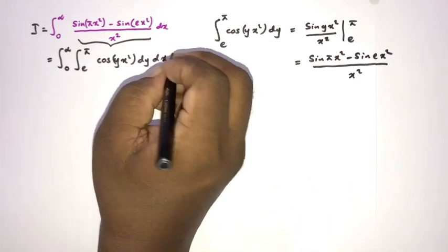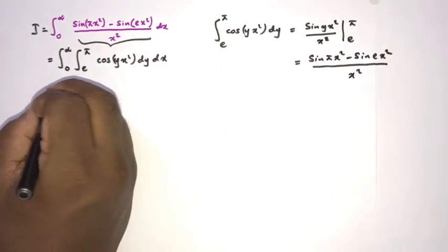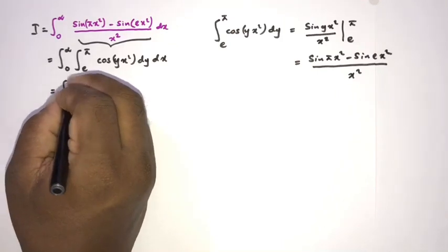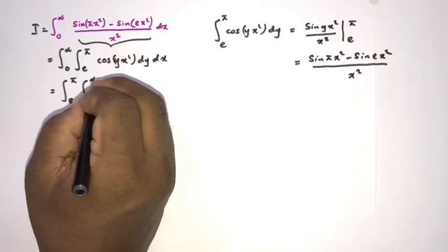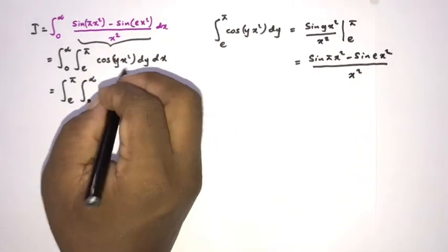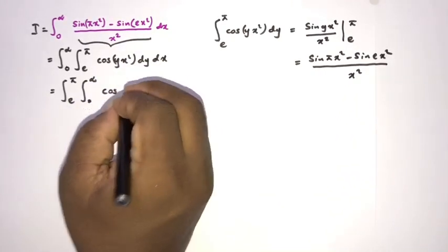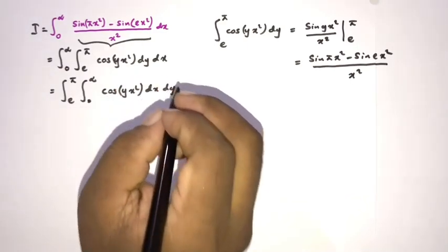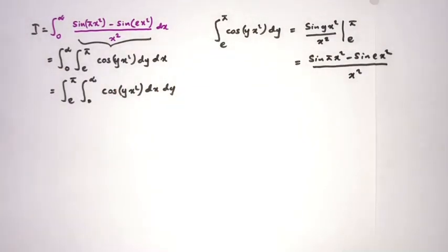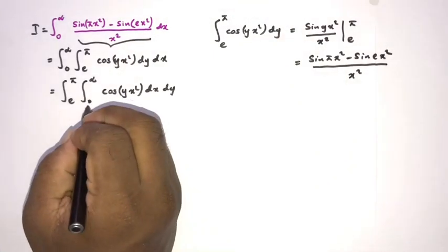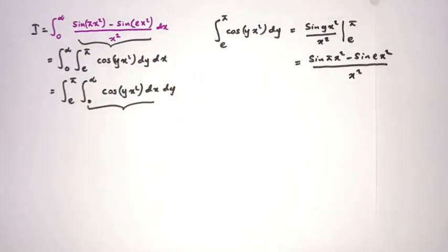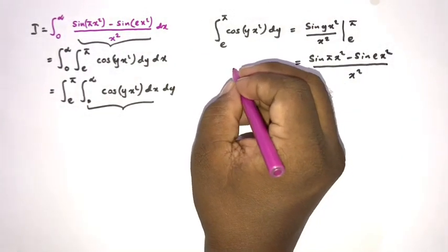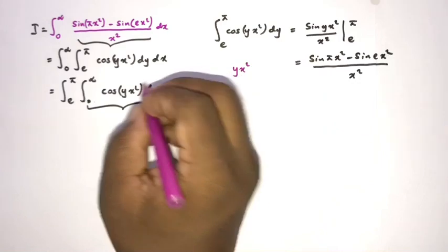We have dx, and then we can change the order of integration: the integral from e to pi and the integral from zero to infinity. We get the integral from e to pi of the integral from zero to infinity of cosine of y x squared dx dy. To evaluate this inner integral I am going to use a substitution. We let y x squared equal t squared.